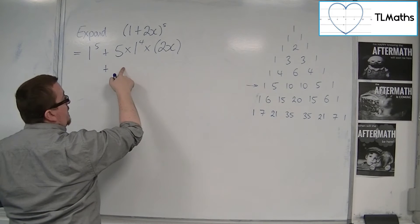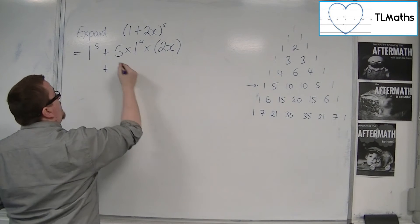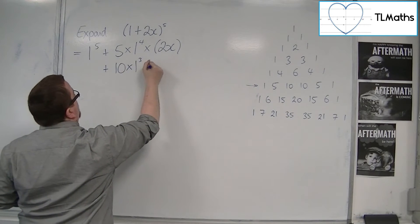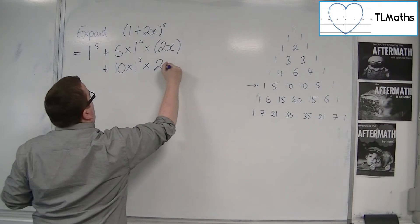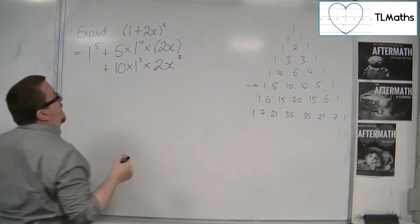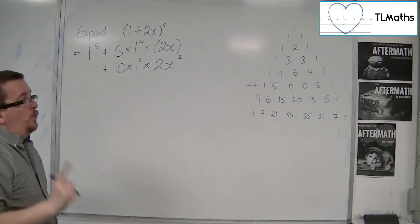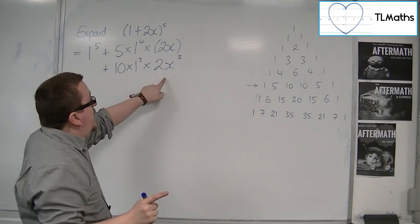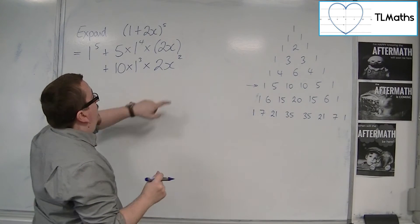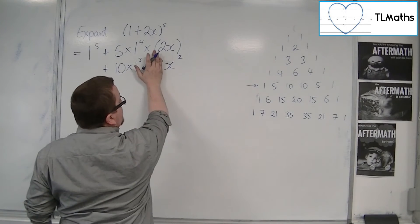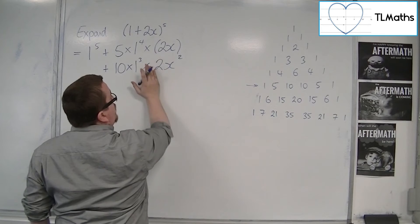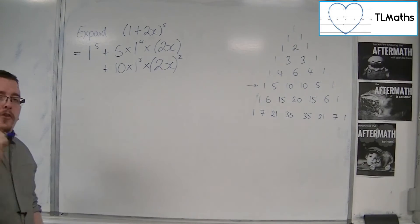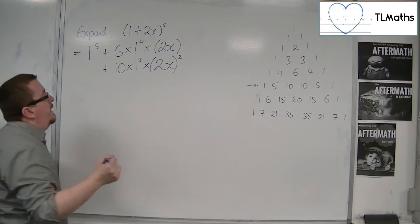And I'll show you that in this next line. So we're going to have 10, 1 reduces in power, and then we've got 2x squared. This is where the mistake is going to be made — because if you don't have that bracket, the likelihood is that you're just going to think it's x squared, not 2x squared. So put the bracket in.